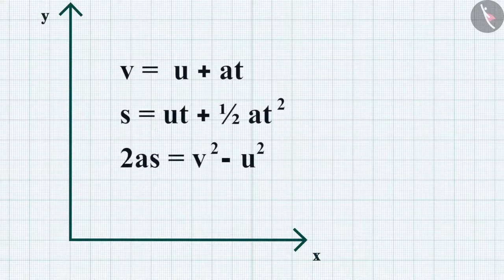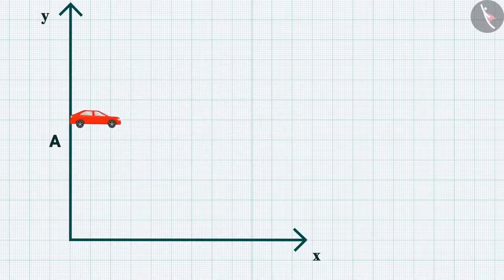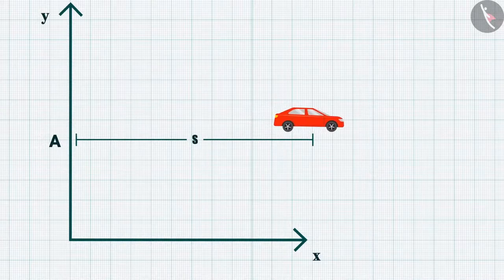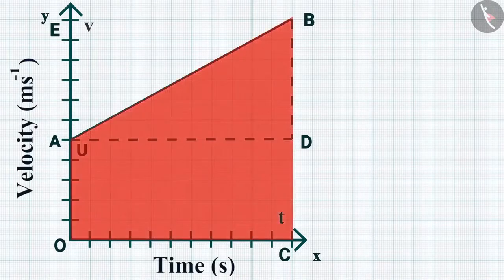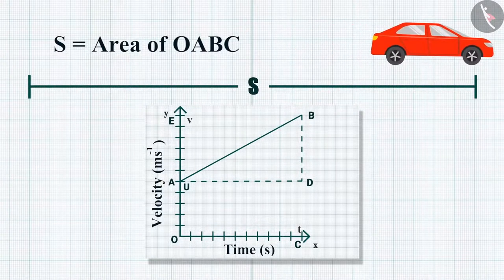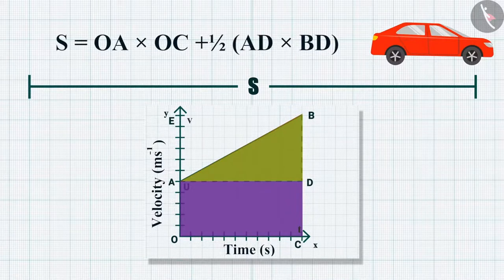Now let's derive the second equation — the equation for position-time relation. Let us say that a car has traveled a distance s with a uniform acceleration of a in time t. The distance traveled by the car can be obtained from the enclosed area OABC in the graph. The distance s = area of OABC = area of rectangle OADC + area of triangle ABD = OA × OC + ½ × AD × BD.